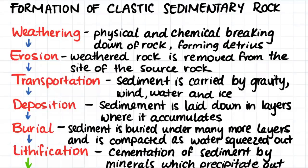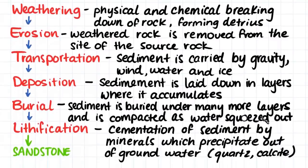This sediment can then be buried under many more layers of sediment and is compacted. This compaction squeezes all the water out of the sediment. The sediment, after it has been compacted, undergoes a process of lithification, where it is cemented together by minerals that precipitate out of the groundwater. These minerals that precipitate out of the groundwater can be quartz or calcite, or a few different other types of minerals.